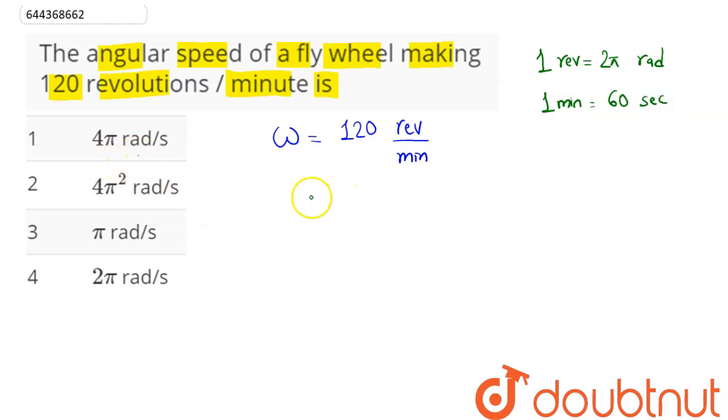So substituting the values, we can see this comes as 120 times - one revolution here is 2π radian, and in one minute there is 60 seconds.